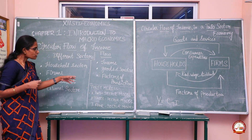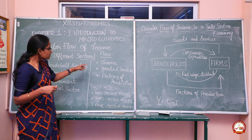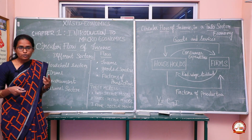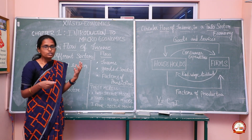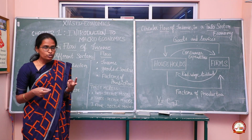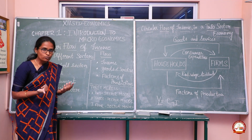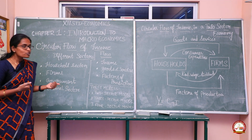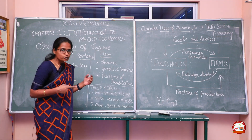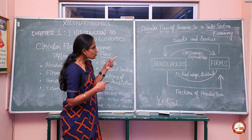Under this model there are three types: the two-sector model, the three-sector model, and the four-sector model. Let's go on to the circular flow of income in the two-sector model.